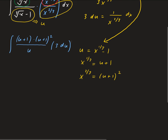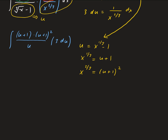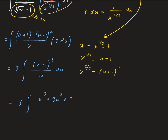Simplifying, we take out the 3, giving us 3 times the integral of (u + 1) cubed over u du. Expanding (u + 1) cubed gives u cubed plus 3u squared plus 3u plus 1, all divided by u.